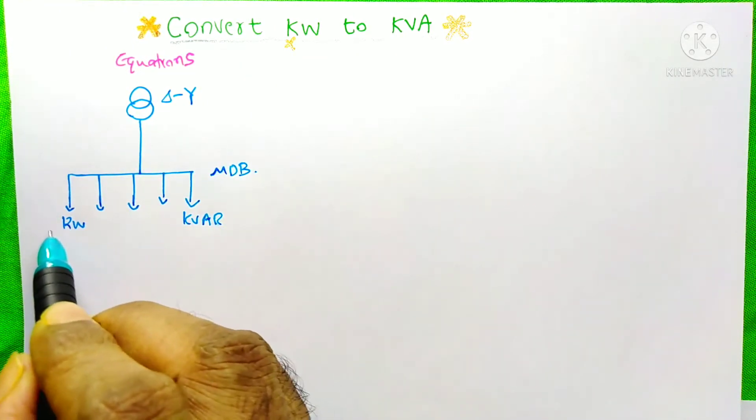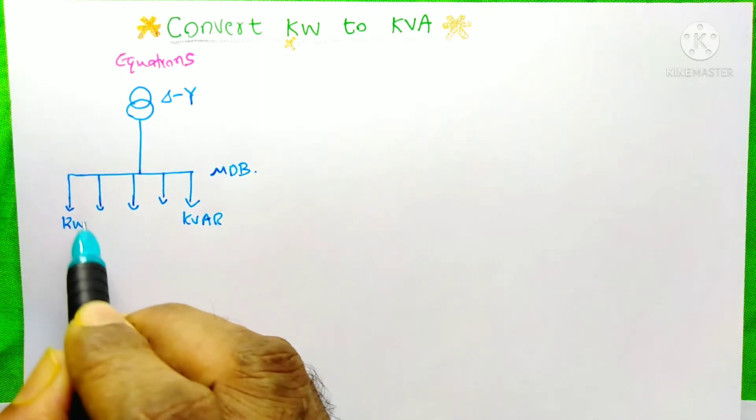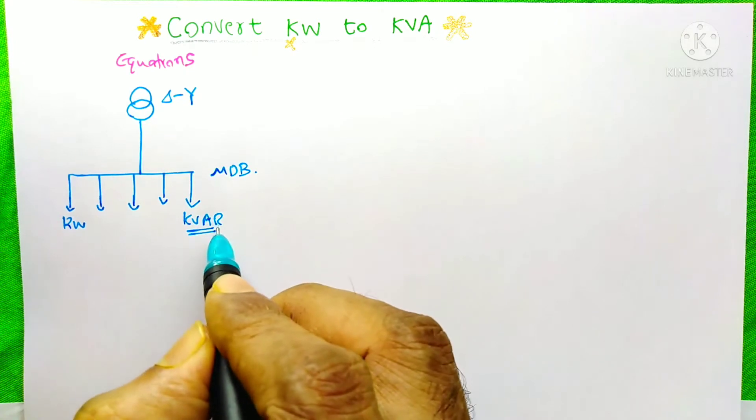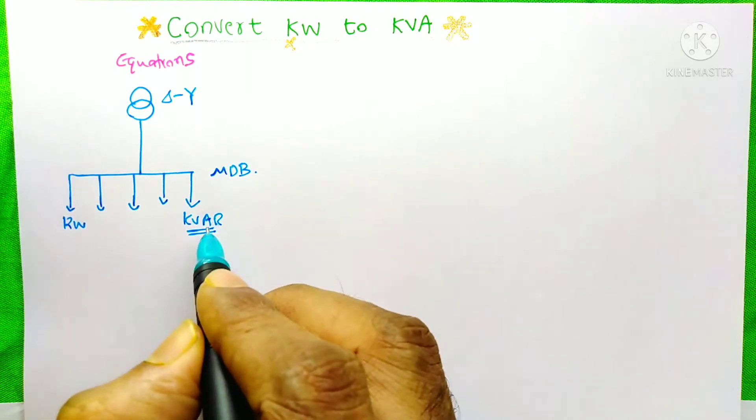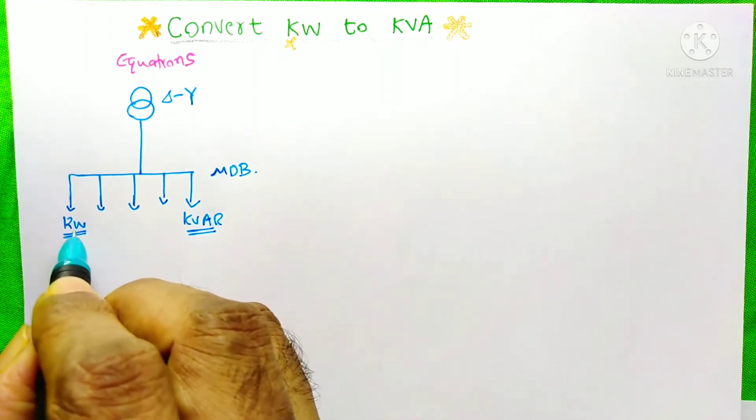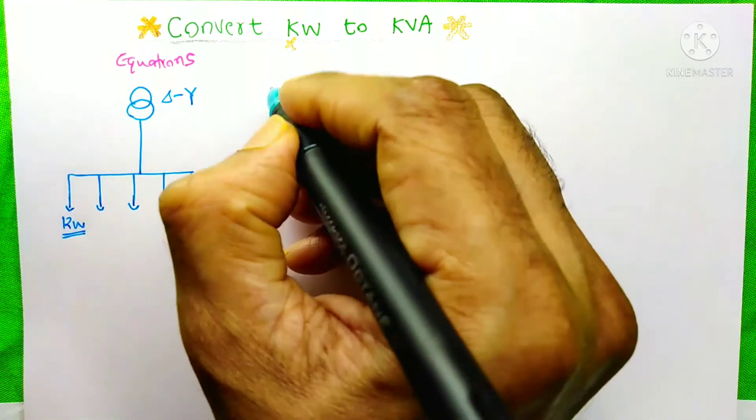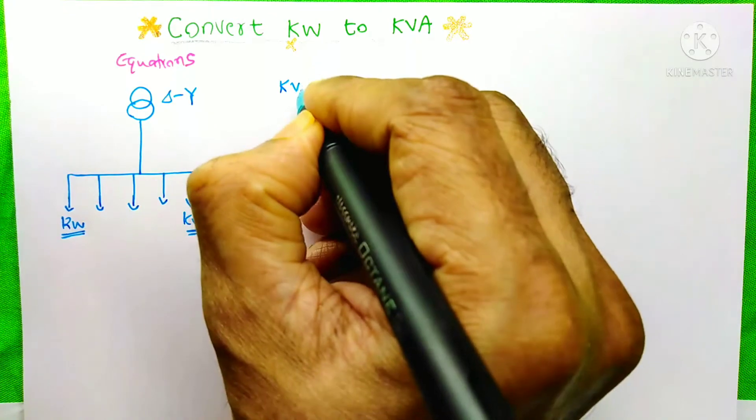In this distribution board there are some loads in kilowatt and here is a capacitor bank in kVAR. This kVAR is for the power factor correction of these loads. And here we need to find the transformer size. We already know that the transformer size is in kVA.